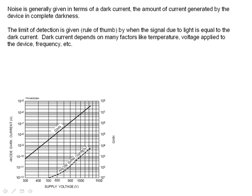And so the limit of detection, this is a rule of thumb, there are ways around this as we'll learn in the next couple of weeks, but the rule of thumb is that when the signal due to the light you're looking for is equal to the amount of current you get from the noise, that's the limit of your detection. In other words, the signal-to-noise ratio is one.